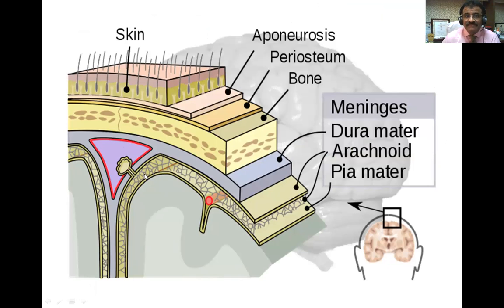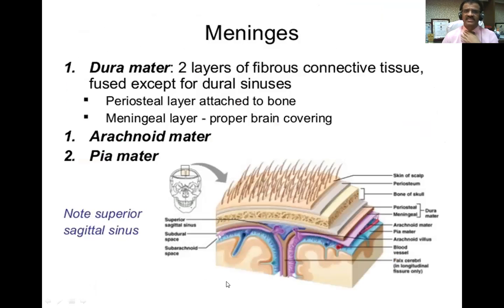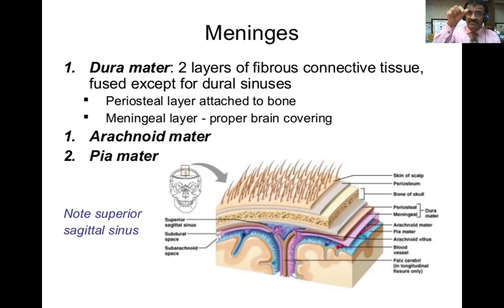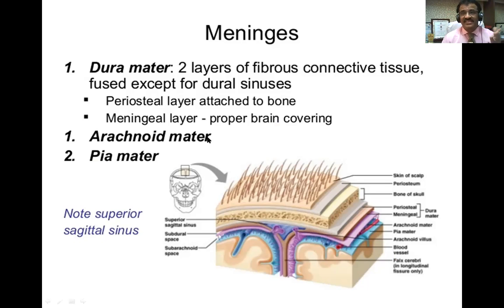The subarachnoid space is where CSF is drained back into the venous sinus. The meninges are actually three layers, but the dura mater is in double layer — two layers of fibrous connective tissue that are fused, except where there are dural sinuses. The meningeal layer also gives rise to four folds: falx cerebri, falx cerebelli, tentorium cerebelli, and sella turcica. The arachnoid mater is loosely covering the brain, like a spider's web. The pia mater is fixedly attached to the brain and inseparable.